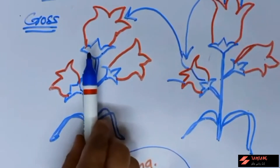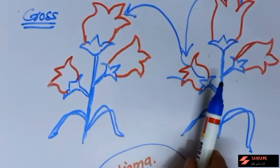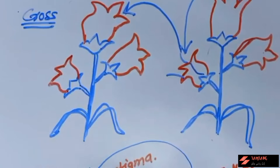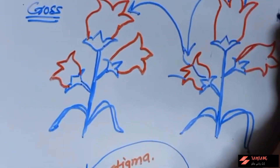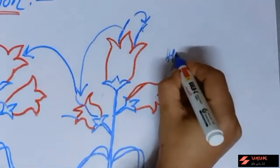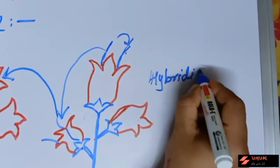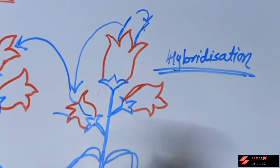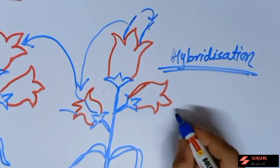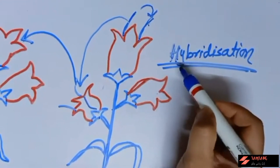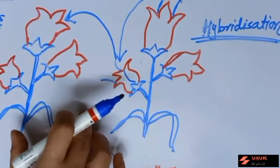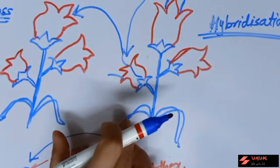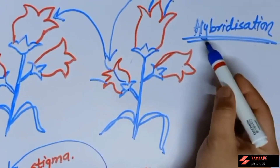Same species means both plants are either both rose or both sunflower. There is also a third type of pollination not given in the textbook: hybridization. This hybridization process is used to increase the yield of the crop, as well as to produce plants with more resistance to diseases. In hybridization, two different plants of two different species are taken and cross-pollination is done purposely.